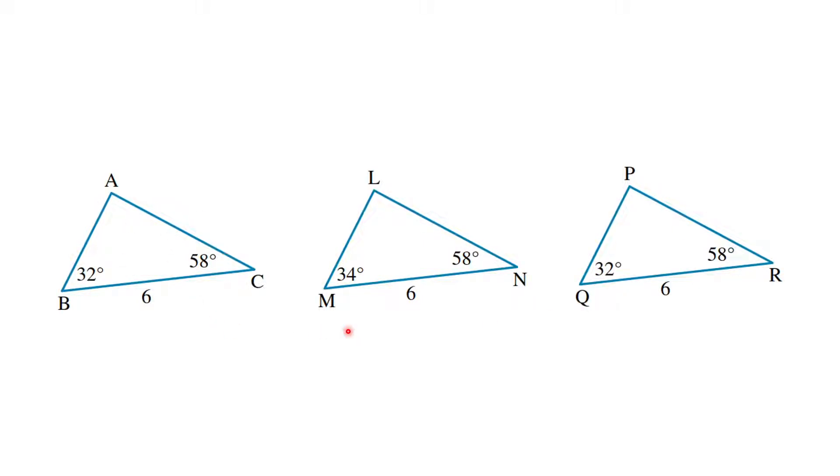Next one. So the reason could actually be any of them, because of AAS, angle, angle, side, because we have matching 32 degrees, matching 58 degrees, matching six, and the six is in the right place between the 32-degree angle and the 58-degree angle. The 34 is just different.